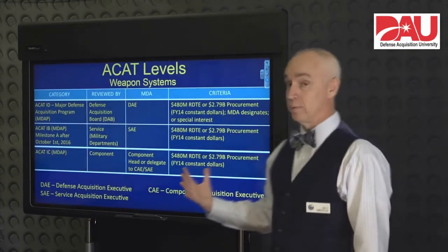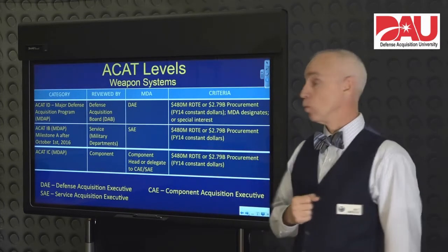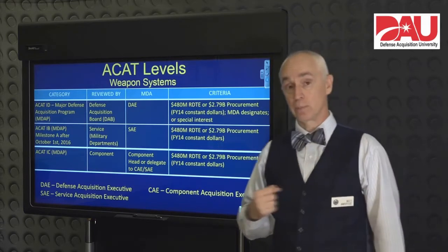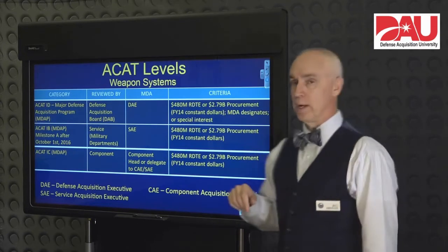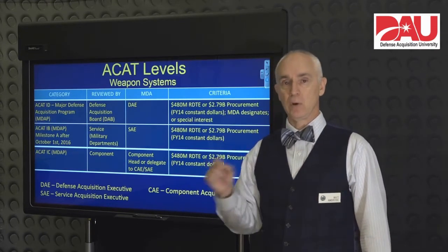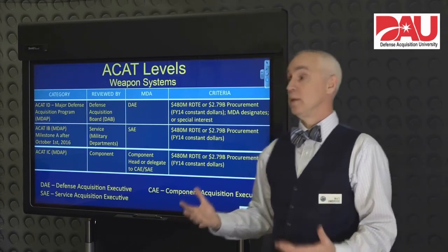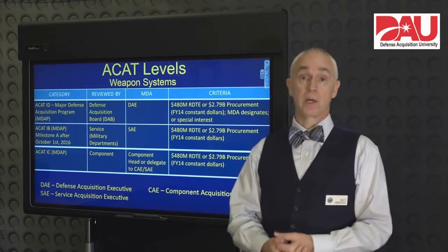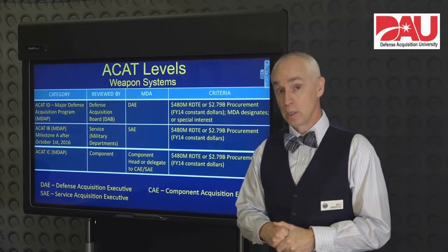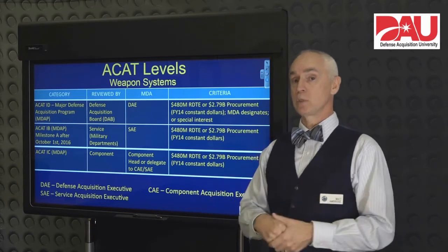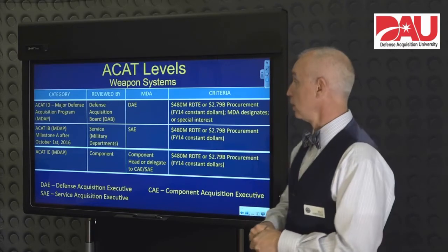So let's look at the money levels that would put you in acquisition category one. These are your major defense acquisition programs, or MDAPs. If you are spending $480 million in RDT&E — research, development, test and evaluation dollars — to develop your system, then you're going to be in acquisition category one. If you are spending $2.79 billion or more in order to procure your systems, that is also going to put you in acquisition category one.